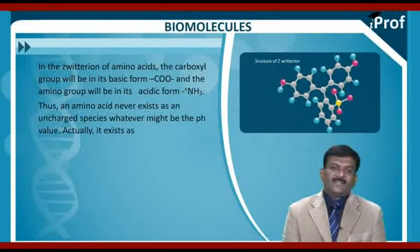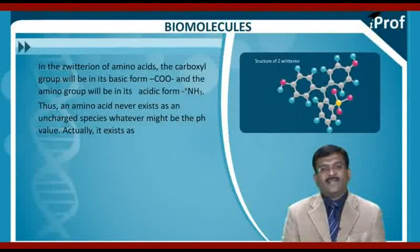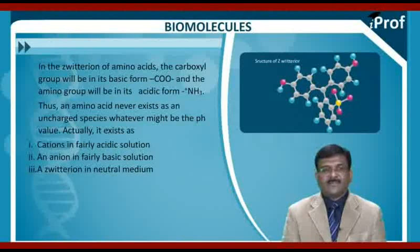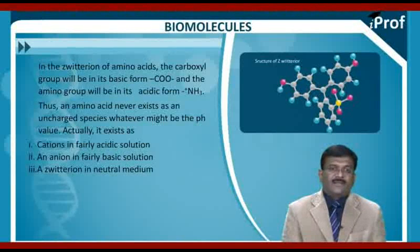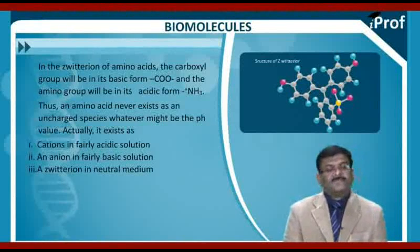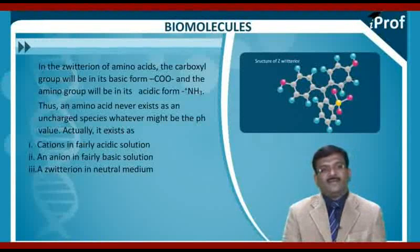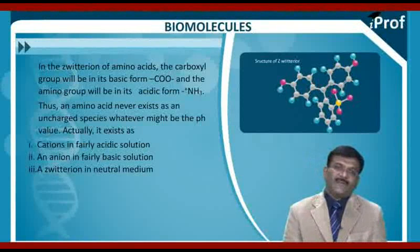Thus, an amino acid never exists as an uncharged species, whatever might be the pH. It exists as a cation in fairly acidic solution, an anion in fairly basic solution, and a zwitterion in neutral medium where pH is more or less equal to 7.